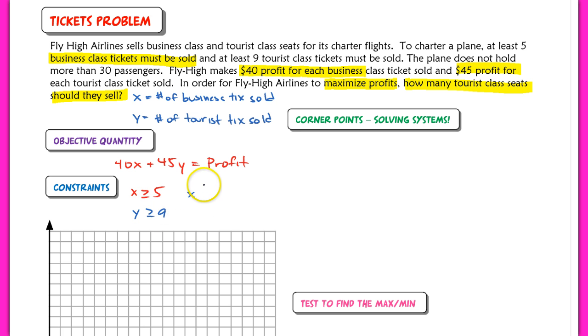Now it goes without saying that X should also be greater than or equal to zero and Y should be greater than or equal to zero because you can't have a negative number of tickets sold, but we don't need to include that.